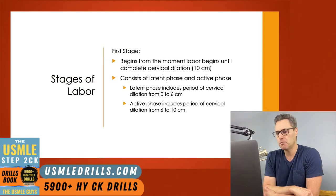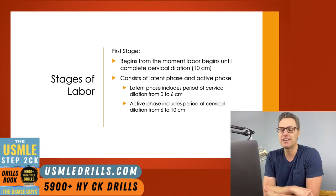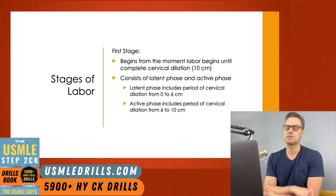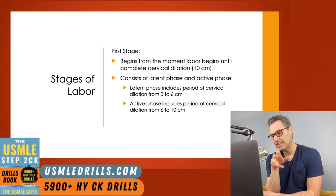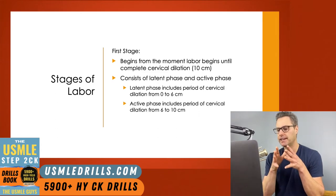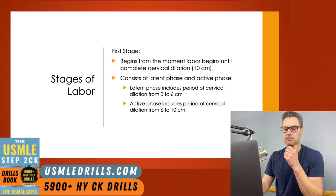Moving on to actual labor, let's start with the first stage. The first stage of labor is defined as the moment labor begins — when contractions occur every 3 to 5 minutes for more than an hour. It consists of the latent phase and the active phase. During the latent phase, cervical change is more gradual, whereas in the active phase changes occur quickly. The latent phase is defined as cervical dilation from 0 to 6 centimeters; the active phase spans from 6 centimeters to full dilation of 10 centimeters. The first stage is your longest stage of labor.